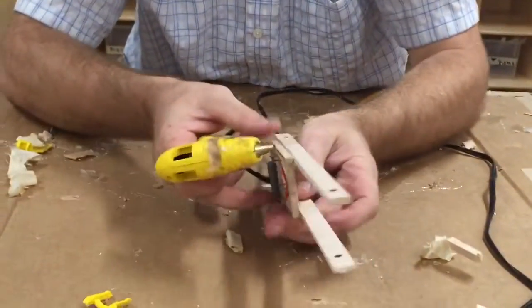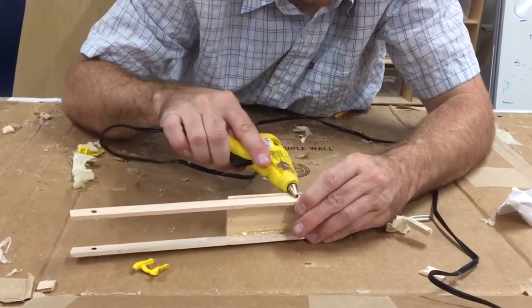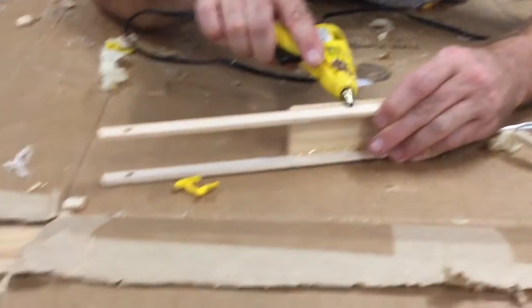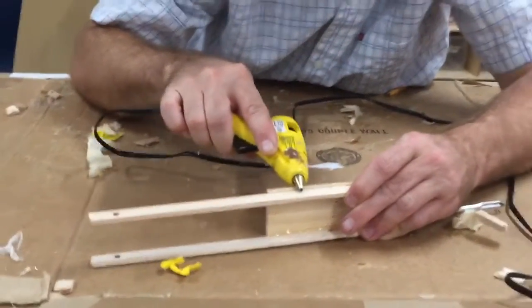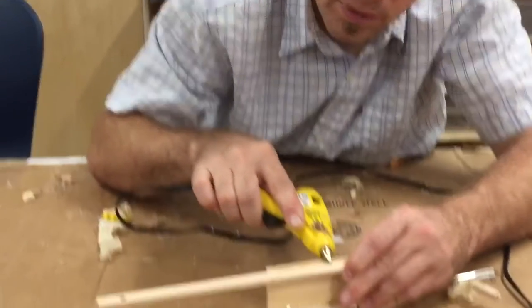Now I'm going to heat up this other side and see if I can get it to line up straight. Again, I'm just using the side of the glue gun to melt this glue. There we go. You see it all melting up there.